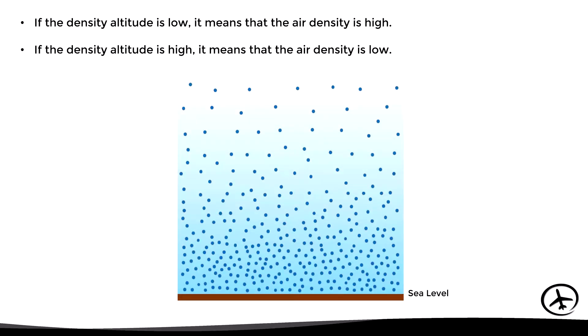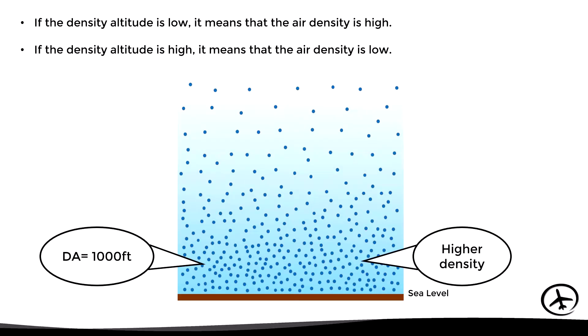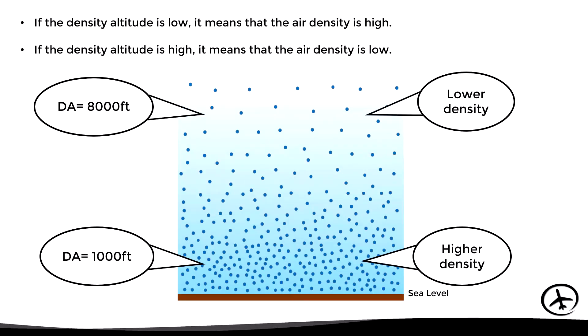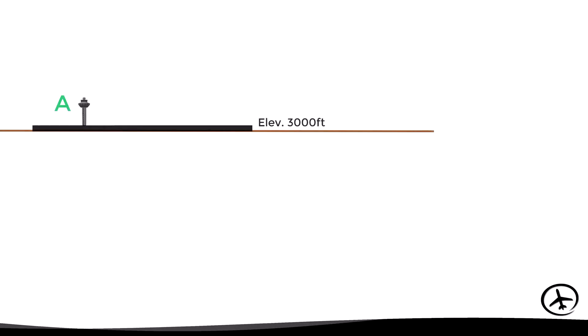In conclusion, if the density altitude is low it means the air density is high, and if the density altitude is high it means the air density is low. For example, a density altitude of 1,000 feet represents a higher density than a density altitude of 8,000 feet.